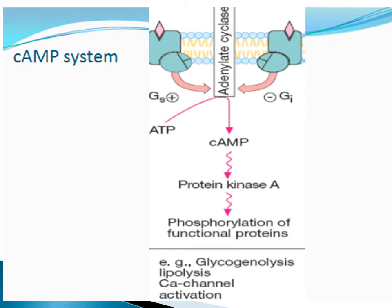Here are some salient comparative features of different receptor families. Regarding location: ligand-gated, G-protein coupled, and enzymatic receptors all have a transmembrane location, meaning they have extracellular and intracellular parts. Nuclear receptors are purely intracellular. Regarding effectors: ligand-gated receptors act through ion channels; G-protein coupled receptors can act through ion channels or, most often, through enzymes; enzymatic receptors act through enzymes; and nuclear receptors act through genes.